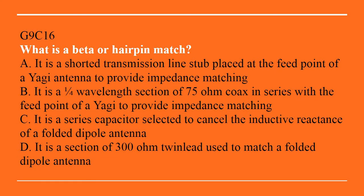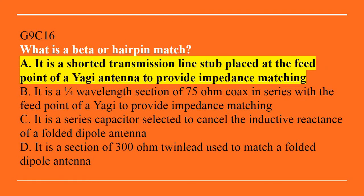G9C16: What is a beta or hairpin match? A. It is a shorted transmission line stub placed at the feed point of a Yagi antenna to provide impedance matching. B. It is a quarter-wavelength section of 75-ohm coax in series with the feed point of a Yagi to provide impedance matching. C. It is a series capacitor selected to cancel the inductive reactance of a folded dipole antenna. Or D. It is a section of 300-ohm twin lead used to match a folded dipole antenna. The answer is A — it is a shorted transmission line stub placed at the feed point of a Yagi antenna to provide impedance matching.